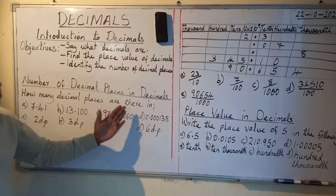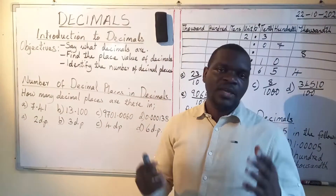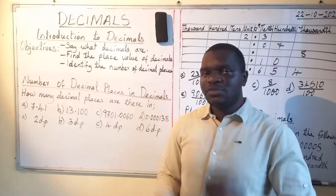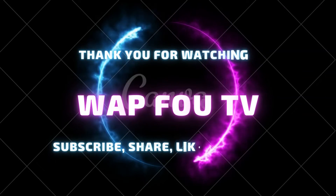Looking at the table examples: example A can be written as 23 tenths. Example B is 7 hundredths — the leading zero is insignificant since there is no whole number to give it value, so we take only the significant figure, which is 7, and it falls under hundredths. Example C is 8 thousandths. Example D, which ends at hundreds, is expressed as 34 over 100, giving 34 hundredths. Example E is 90,654 thousandths.